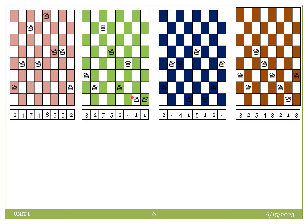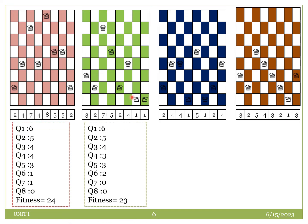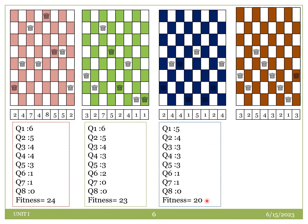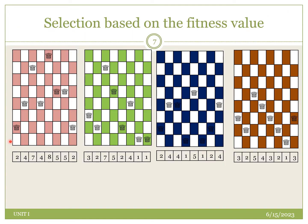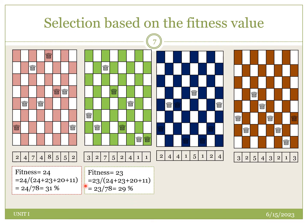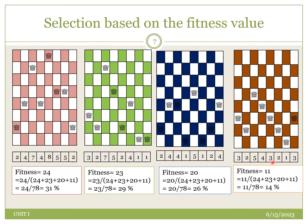This process is repeated for all remaining initial populations. For the second population the fitness is 23, for the third it is 20, and for the last it is 11. Next, we select the best fitted population by calculating the weighted average and percentage. For the first population, it is 24/78, which is 31%. For the second it is 29%, the third is 26%, and the last is 14%.